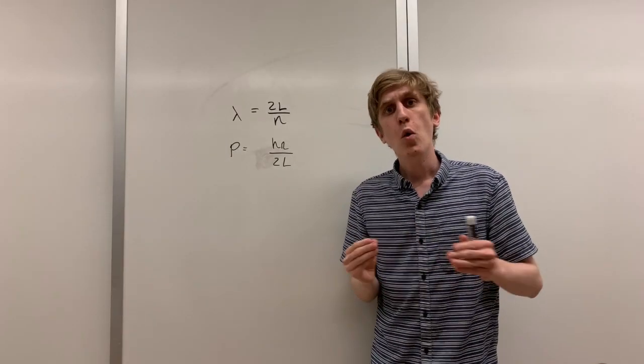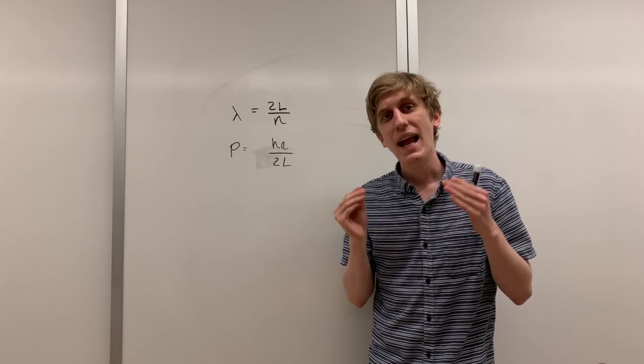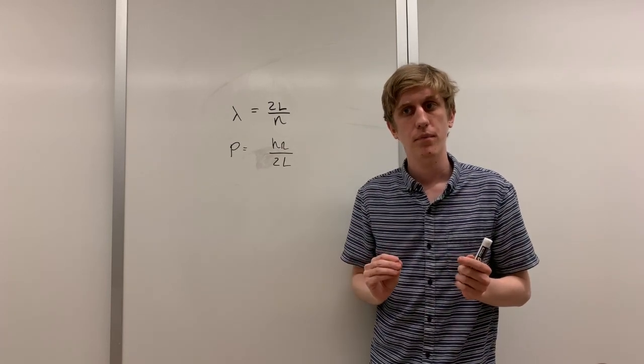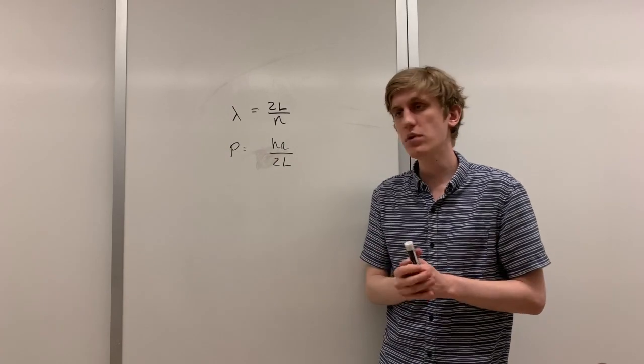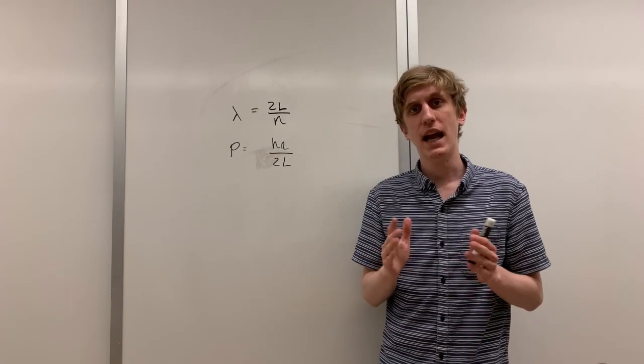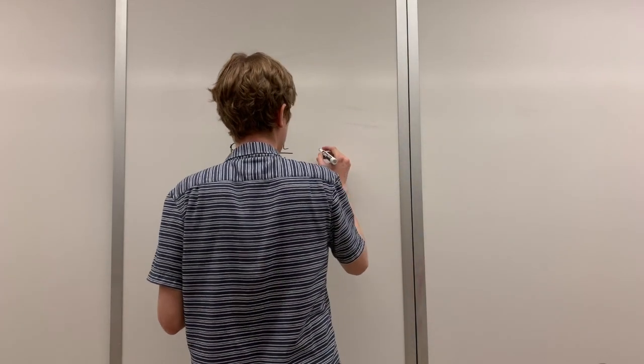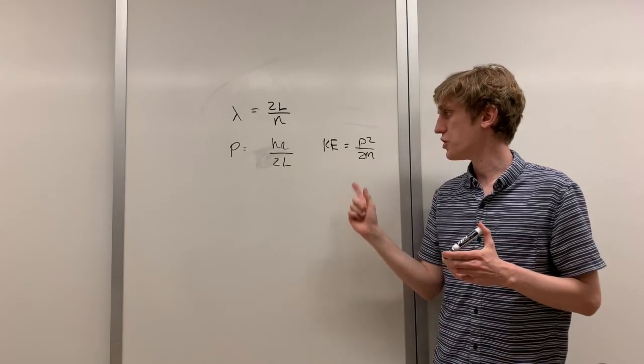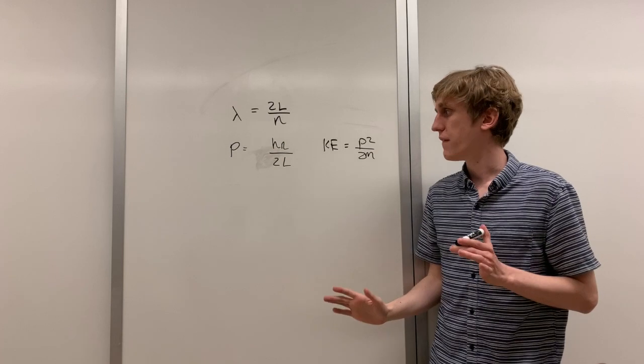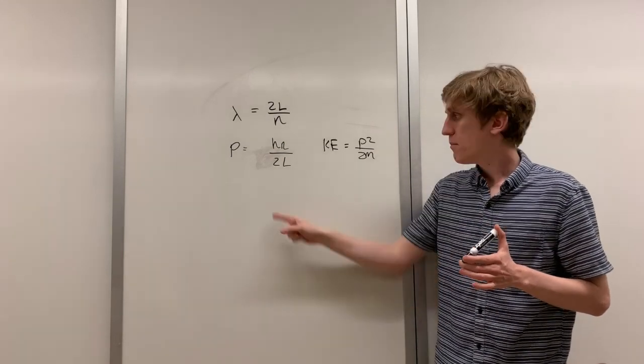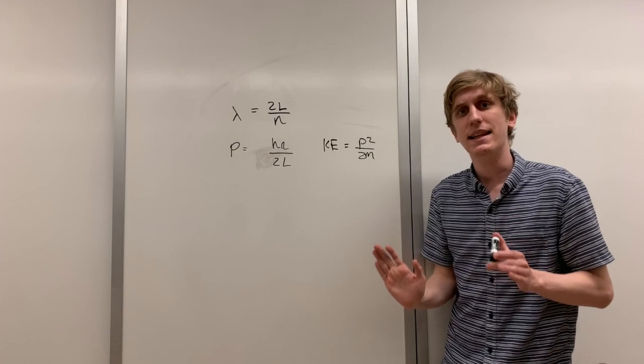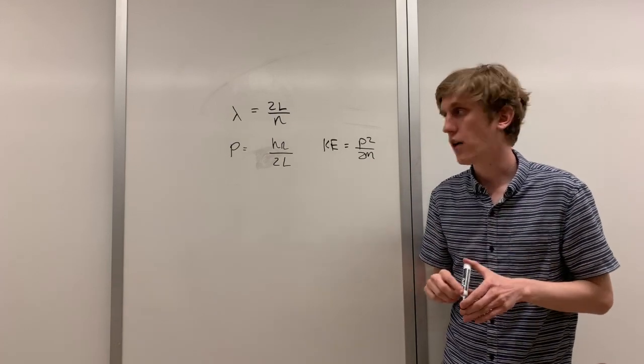Using this, we can determine the allowed energies of the particle. We can do this because there's a direct relationship between kinetic energy and momentum. That relationship is this: kinetic energy is just equal to the momentum squared divided by 2m. Plugging this into this equation, we get that the kinetic energy has to be the following.